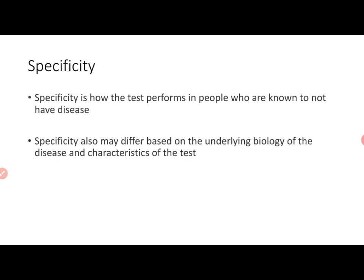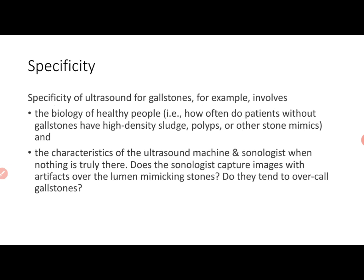Specificity is how the test performs in people known to not have the disease, or in otherwise apparently normal people. Specificity also differs based on the biology of the disease and the characteristics of the test. For example, specificity of ultrasound for gallstones involves the biology of healthy people — how often do patients without gallstones have high-density sludge, polyps, or other stone mimics? We need to know that.